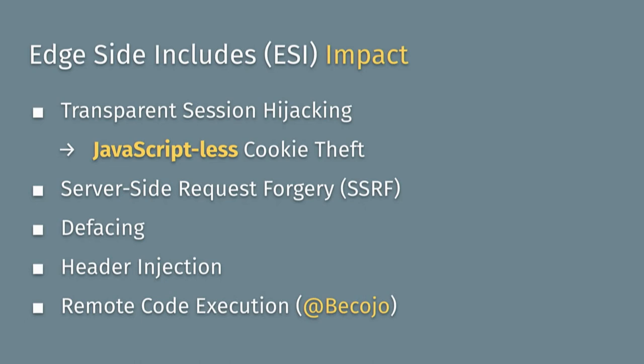What you can do with ESI injection: the typical attack forces a browser to visit your website by loading an image or any HTML tag triggering a GET request. The ESI variable in the response content tells the cache to replace it with the cookie value. If the browser receives this after it transits through an ESI-enabled cache server, your PHP session ID gets leaked to your attacker server. That gives you full account takeover — something you could never do with JavaScript-based XSS. You can also use ESI include as an SSRF gadget, do defacement, and even achieve remote code execution in some implementations.